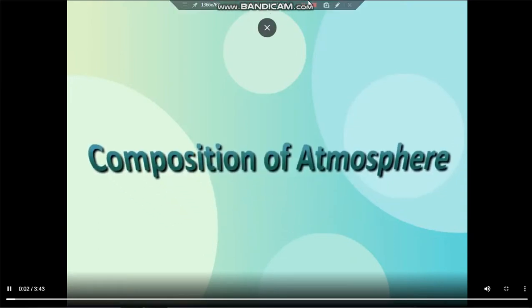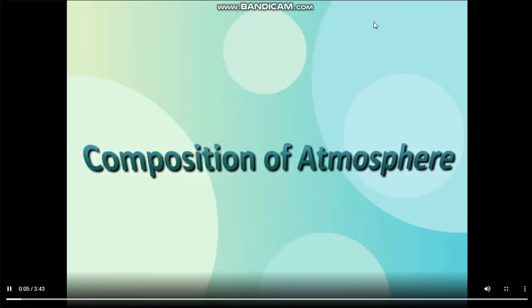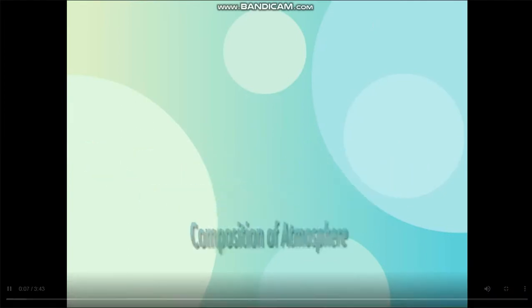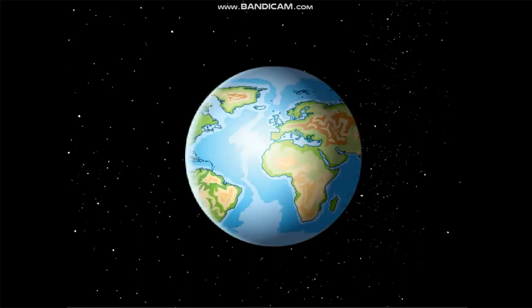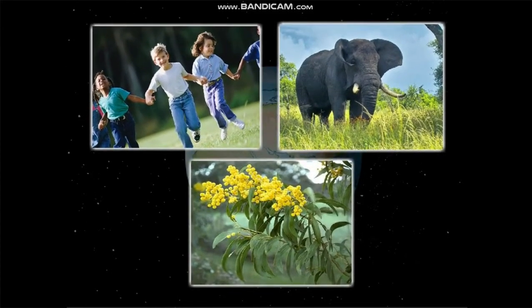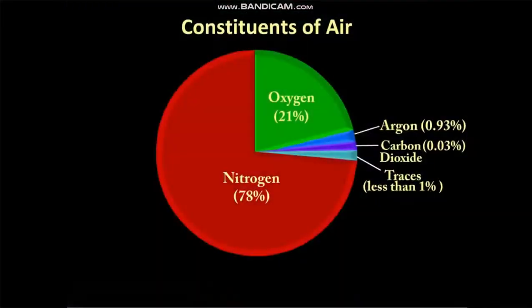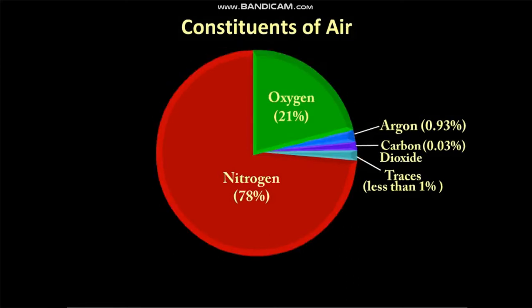Come children, let's explore the composition of the Earth's atmosphere. Earth is the only planet in the solar system that has an atmosphere to support life. Take a look at this pie chart. The main constituents of air are nitrogen, oxygen, argon, carbon dioxide, and traces of other gases.